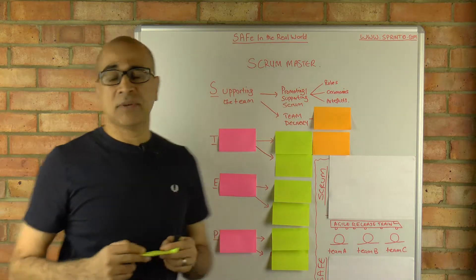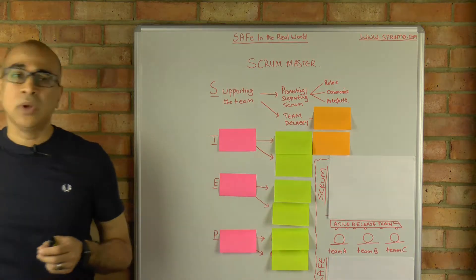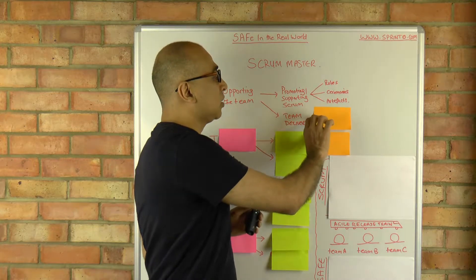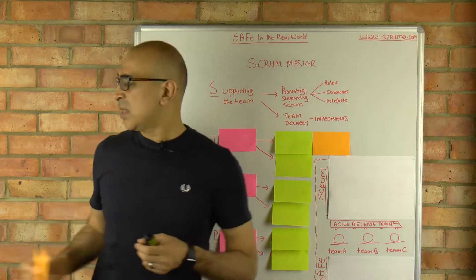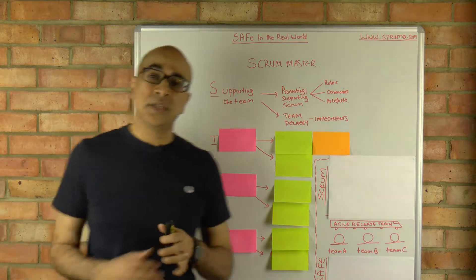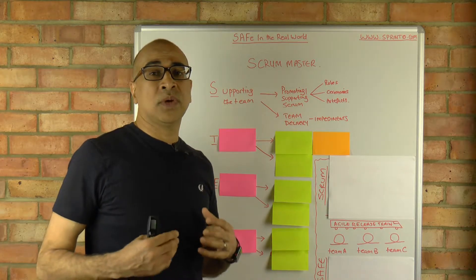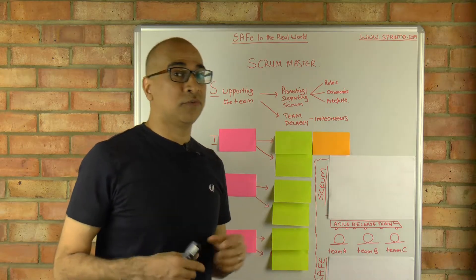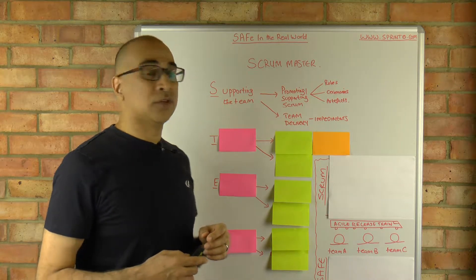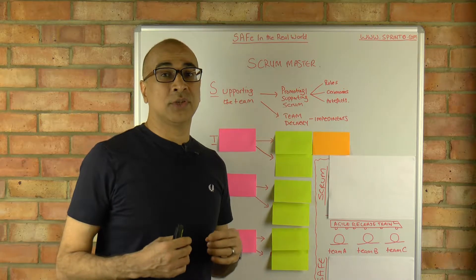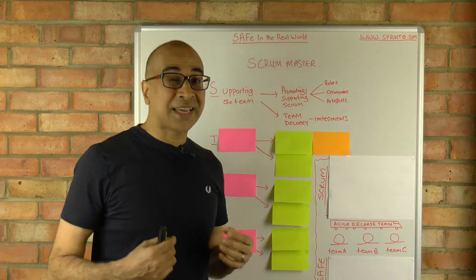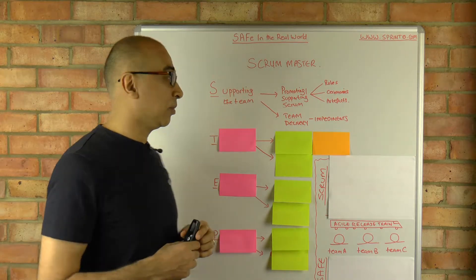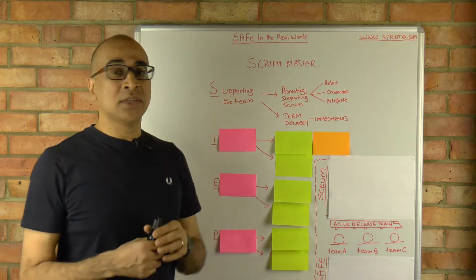The next thing the Scrum Master is responsible for is supporting the team in its delivery. In Agile, there's a term called impediments — when the team or an individual is blocked from doing the work they need to do. The Scrum Master plays a key role in helping to resolve those blockages or impediments.